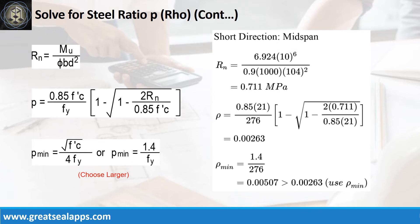Given short direction, mid-span moment equals 6.924 kN·m/m. Resistance factor equals 0.9. B equals 1,000 mm and D equals 104 mm. The beam design ratio Rn equals 0.711 MPa, and reinforcement ratio ρ equals 0.00263. Use ρ minimum of 0.00507.